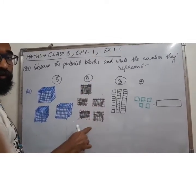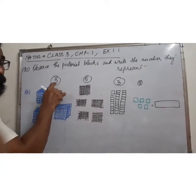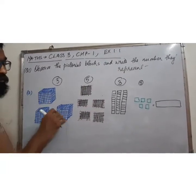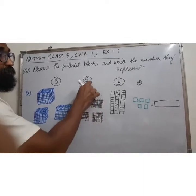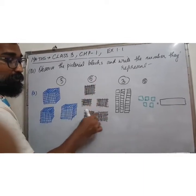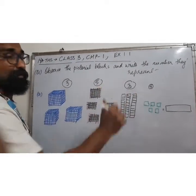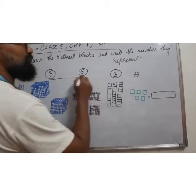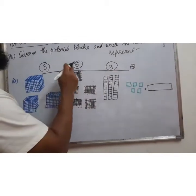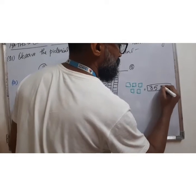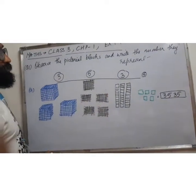This is 1, 2, 3, 1000 ka box, 100 ka 5 packets, 10 ka 3, and then 5 single. So I'm going to write this as 3, 5, 3, 5. Clear? The boxes represent the number of boxes. Now we're going to do question number B.